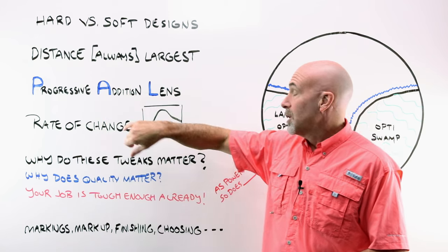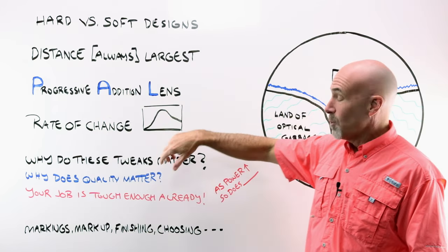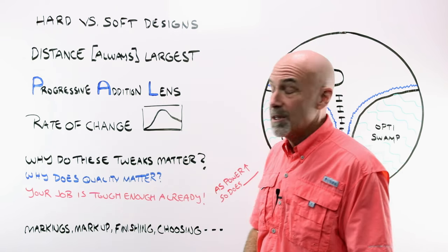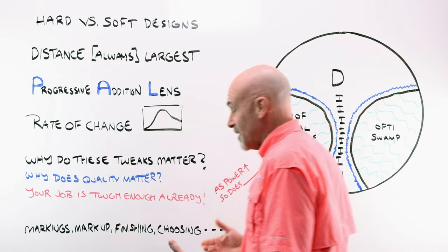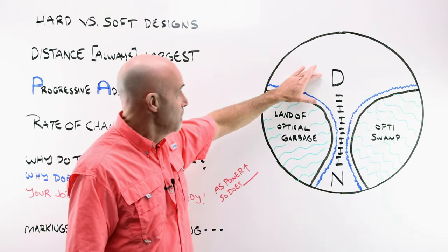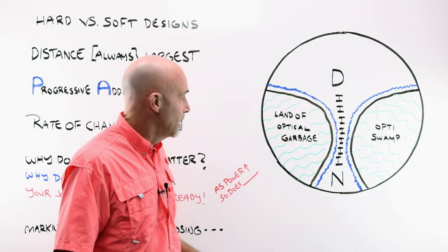You will hear progressives, also called progressive addition lenses or PALs. You still see that in magazines. You'll still see that stuff online. Where does it come from? It's the concept that it is a progression of power. You have your distance, intermediate, and near.